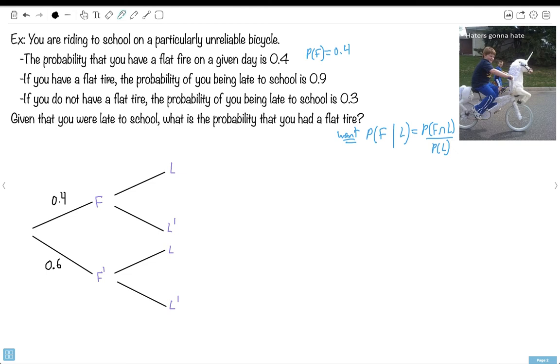So now we know if you had a flat tire, then the probability of being late is 0.9. So watch, flat, late, this is 0.9. Do you see from there I can figure out that if I went flat and not late, well, 0.9 plus 0.1 is the only way to get one together. How about this? If you didn't have a flat tire, so you're down here, the probability of you being late is 0.3. So 0.3 goes up here for late. What goes down here then? 0.7. Do you see I've got them all figured out?